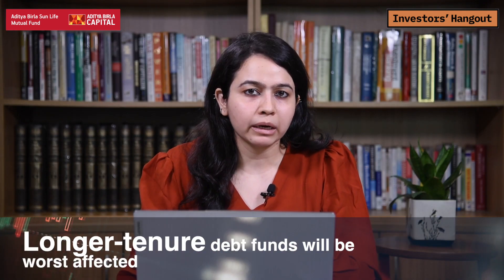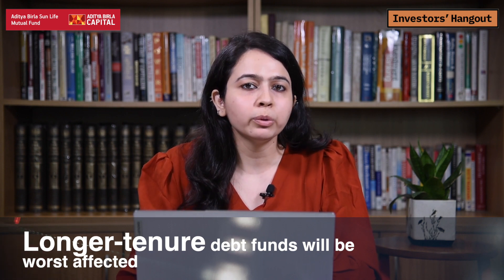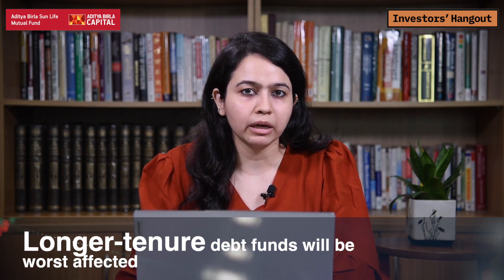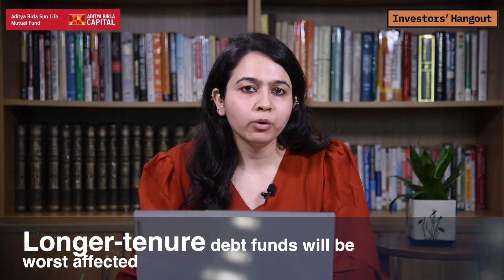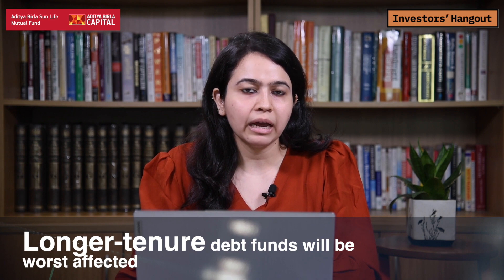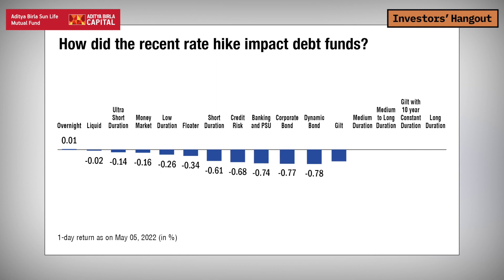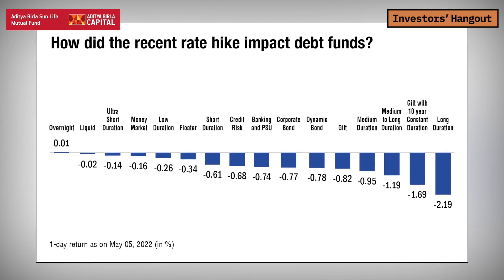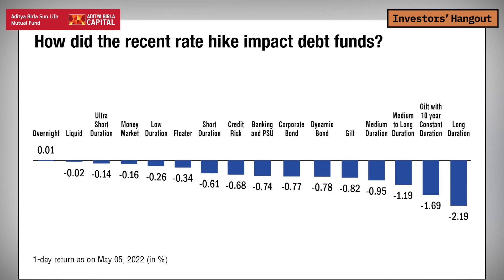When talking about the magnitude of fall that each of these categories might witness, it's the longer duration papers that will be the most or worst affected. The longer tenured funds will be the worst affected. As you can see from the chart on screen, the shorter term funds have been the least impacted since the RBI surprised the entire market with the repo rate hike, while the longer duration ones are all the way down in negative territory.